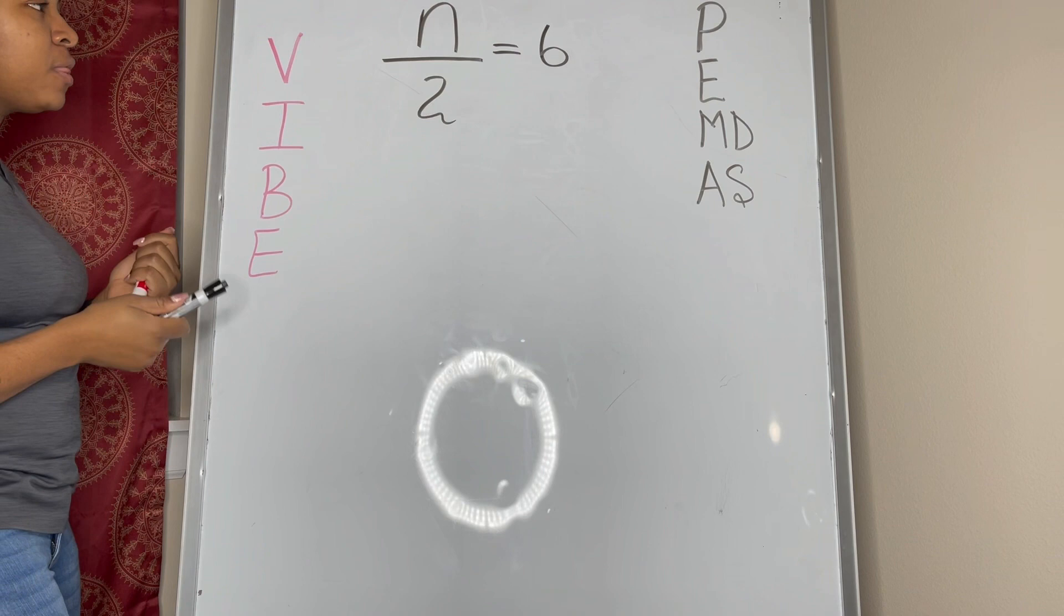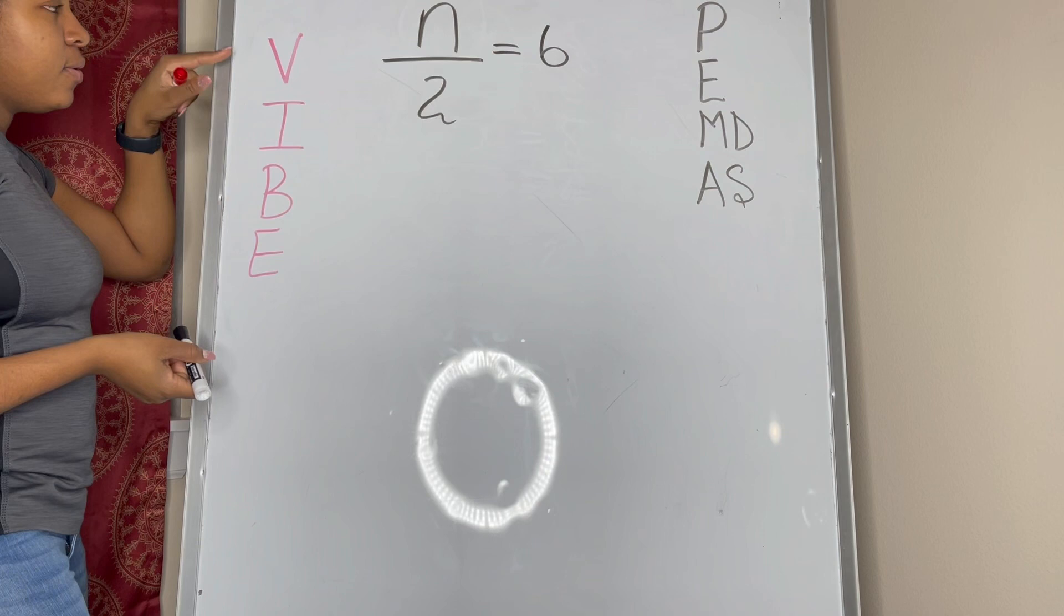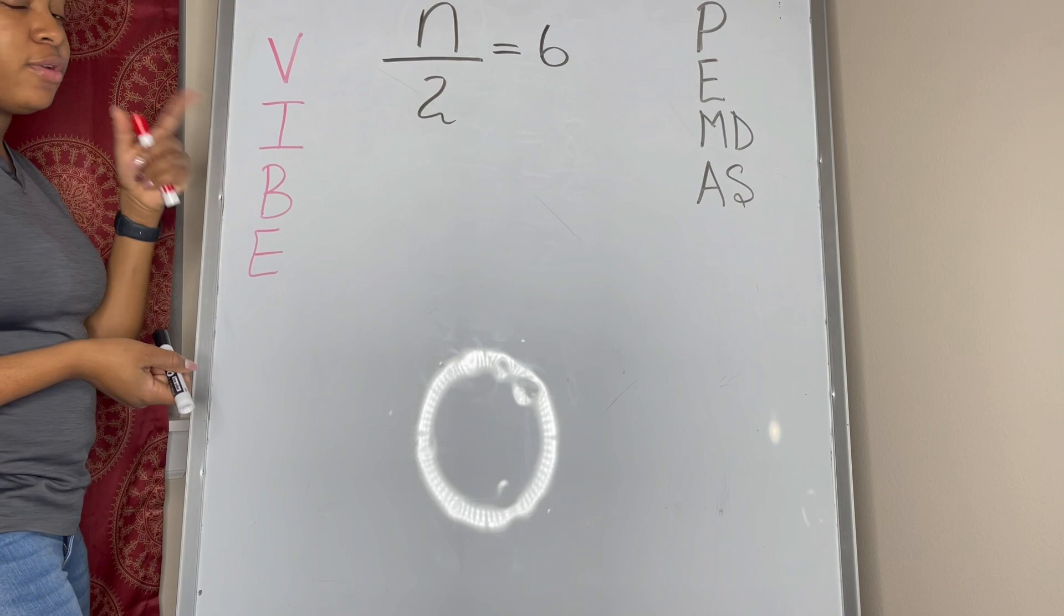Alright, now let's try to solve another equation. Again, we're going to use the VIBE method. We're going to try to get a variable by itself as always. So we start with V, we need to identify our variable.